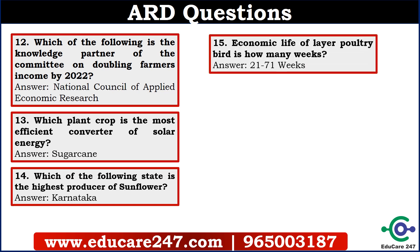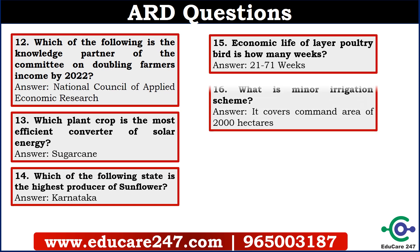The fifteenth question is: the economic life of a layer poultry bird is how many weeks? It is a question from NABARD Banking Project. The answer is 21 to 71 weeks. The sixteenth question is: what is the minor irrigation scheme? The answer is it covers a command area of 2000 hectares.